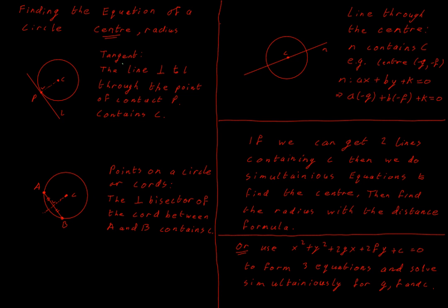The first situation is when we have a tangent — a line that just touches the circle at one point, which I've labeled point P. We already know that the perpendicular distance from that line to the center is the radius of the circle. A connected point to that is: if I get the equation of this dashed line here — the perpendicular to L going through point P — that's a line that contains the center of my circle.